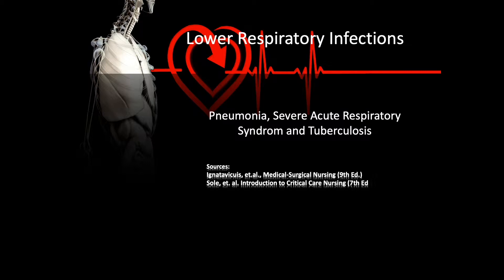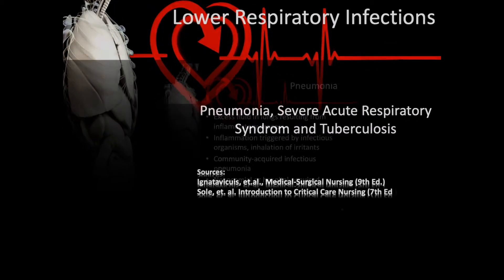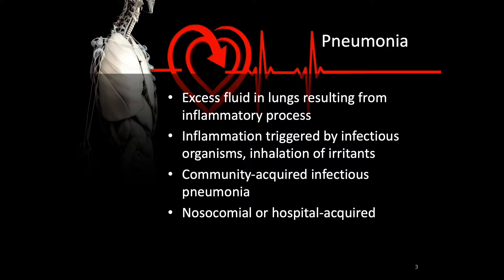Pneumonia is defined as excess fluid in the lungs from an inflammatory process, which can severely reduce gas exchange. Sources of inflammation can be triggered by infectious organisms or inhaling irritating agents. Inflammation occurs within the interstitial spaces, around the alveoli, and often in the bronchioles. Pneumonia can occur as lobar pneumonia with consolidation, or as bronchopneumonia with diffuse scattered patches around all of the bronchi.